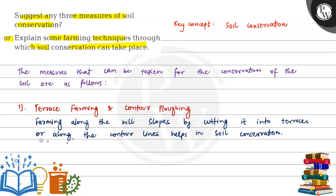This question asks which three methods can be used for soil conservation. The key concept of the question is soil conservation. The measures that can be taken for the conservation of the soil are as follows.